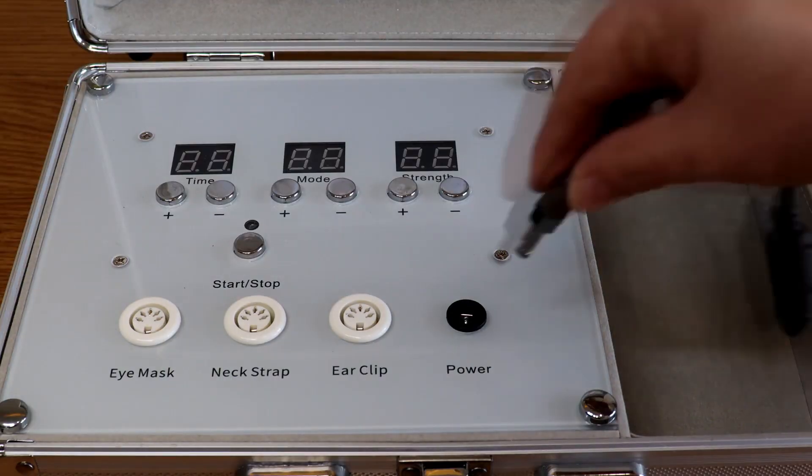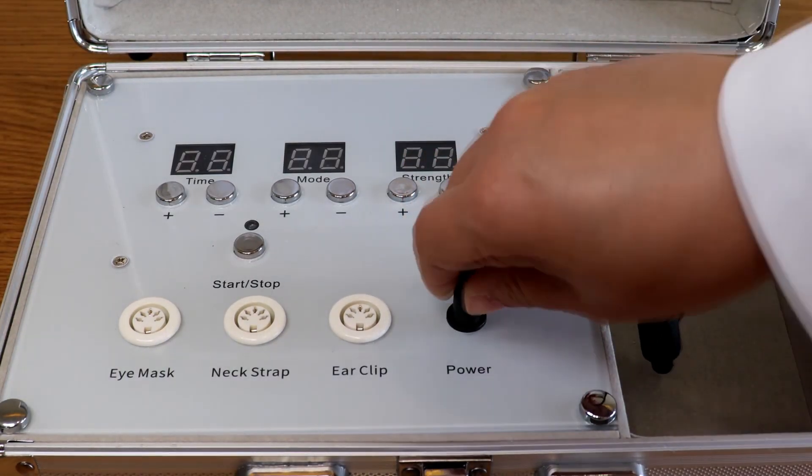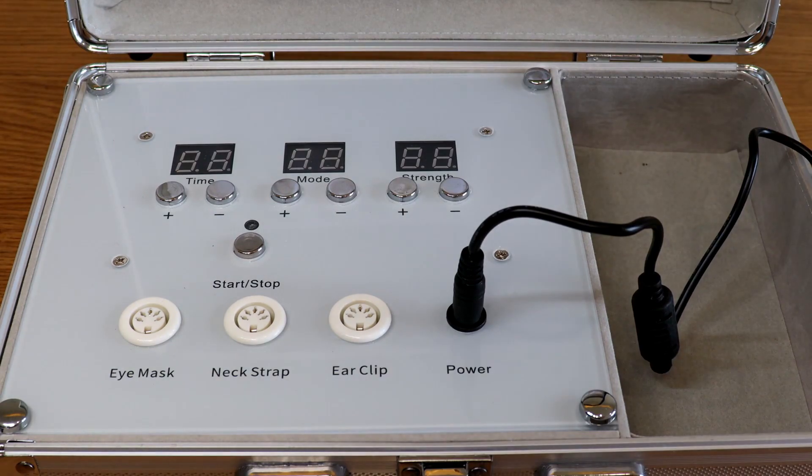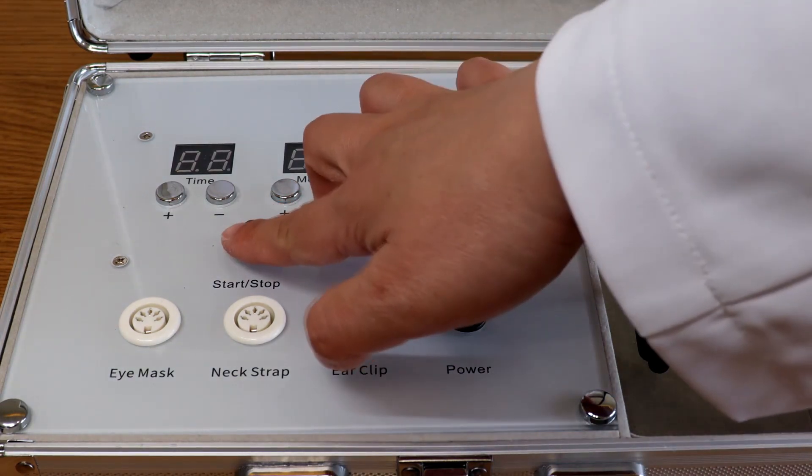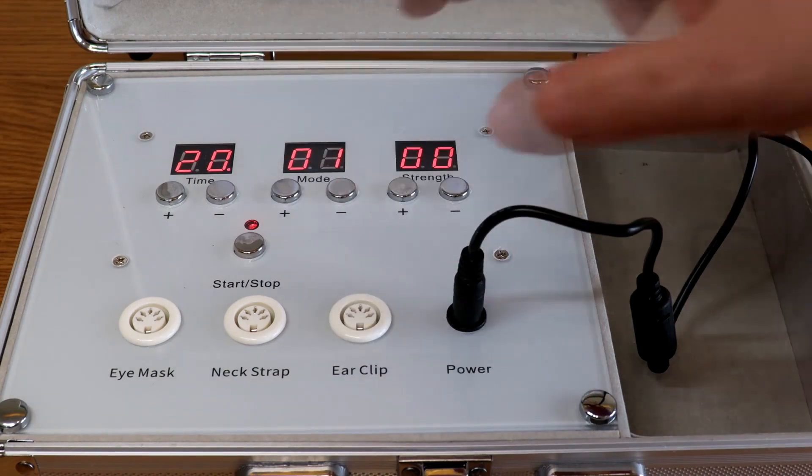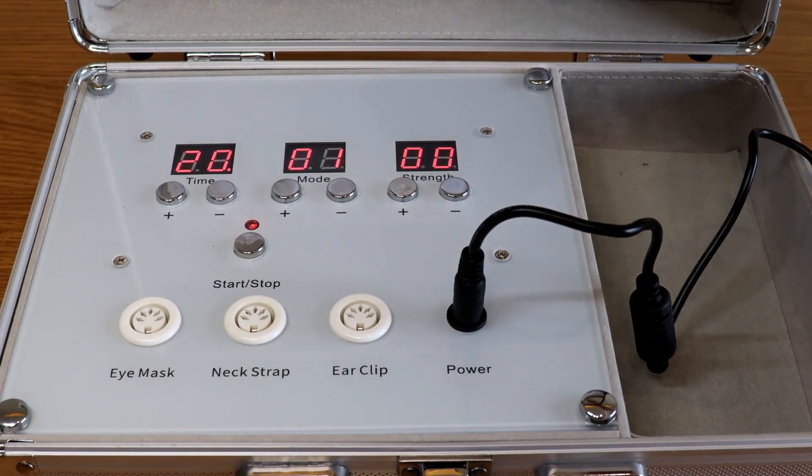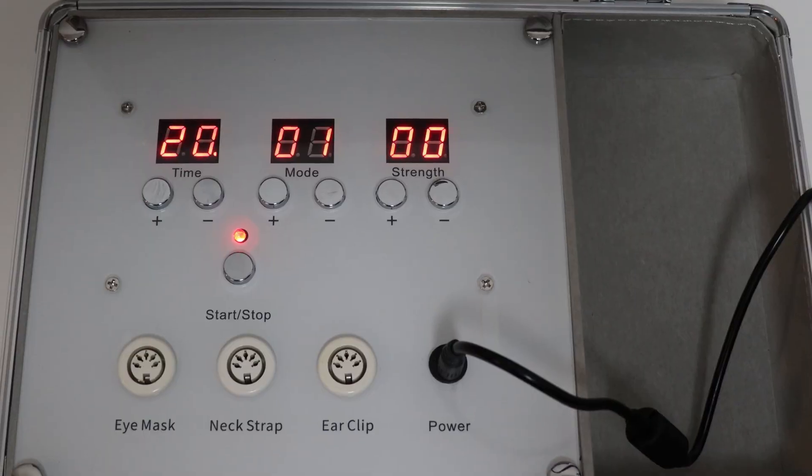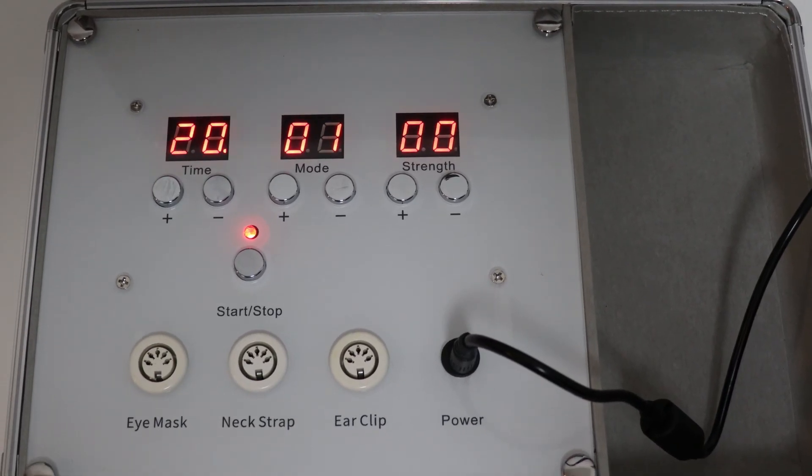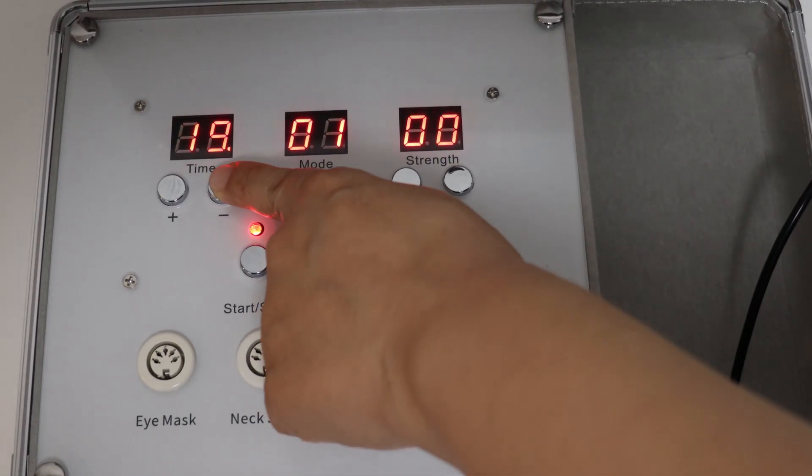Plug in the power. Make sure the device is powered up by pressing the start and stop button. If everything works fine, the red light will illuminate. One treatment session, 30 minutes, will be divided into four parts.